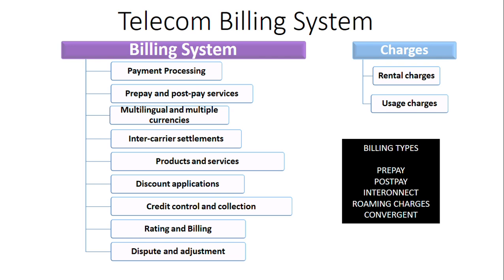Interconnect billing means, for example, you have taken a plan from ABC company, but one service — say data — is not provided by them directly. They purchase that service from XYZ company. You still connect only with ABC and receive a single bill covering phone calls, SMS, and data, but the data portion reflects the cost purchased from XYZ. This is interconnect billing.